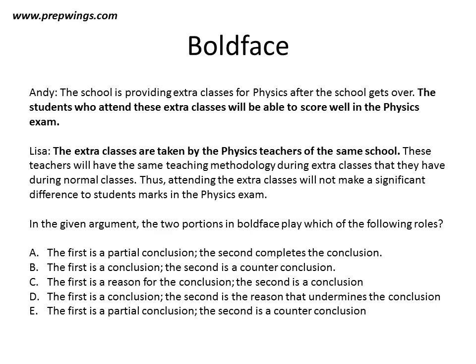The options given to us are: the first option says the first is a partial conclusion and the second completes the conclusion. The second option says the first is a conclusion and the second is a counter conclusion. The third option states the first is a reason for the conclusion and the second is a conclusion. The fourth option states the first is a conclusion and the second is the reason that undermines the conclusion. The fifth option says the first is a partial conclusion and the second is a counter conclusion.